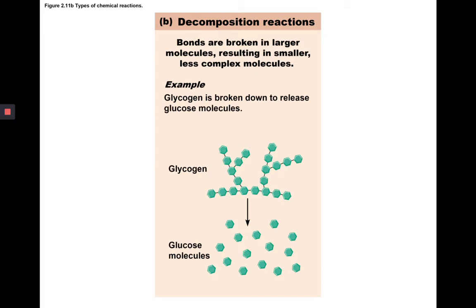Here we have the example of glycogen is broken down to release glucose molecules. Glycogen is a short-term energy storage molecule found in humans and other animals. It can be broken down into its subunits, which are glucose molecules, for readily available sugar in the blood, which is given to cells.